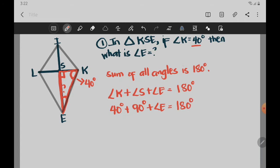Equals 180 degrees. Now, let us solve. So 40 plus 90, we have 130 degrees plus angle E equals 180 degrees. And then transpose positive 130, we have angle E equals 180 minus 130 degrees. So angle E is equal to 50 degrees.